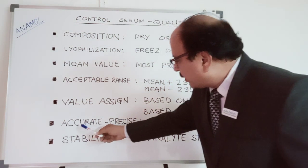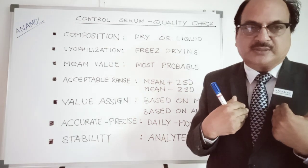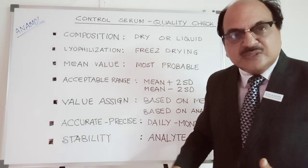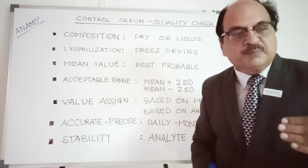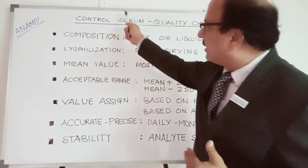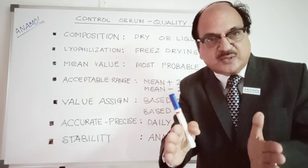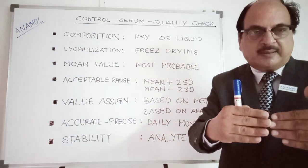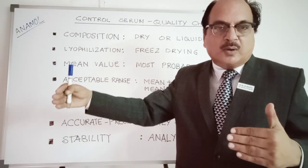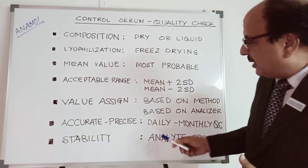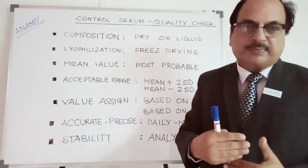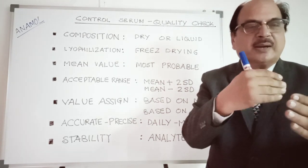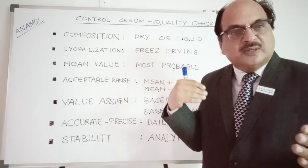Now let's discuss accuracy versus precision — key concerns for a laboratory technician. Accuracy means: is the value I'm observing today in a patient sample correct? To check this, I run a control serum in the same setup, and if I get the value within the mean or acceptable range, my results are accurate. But what about tomorrow, the day after, or one month later? That's where precision comes in.